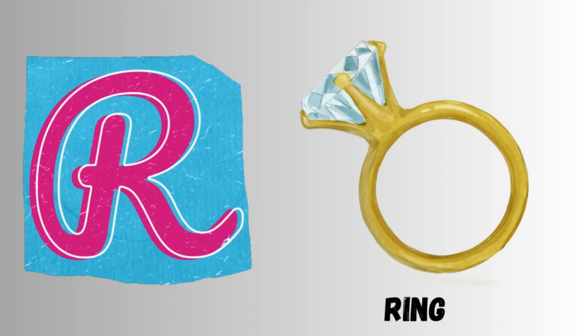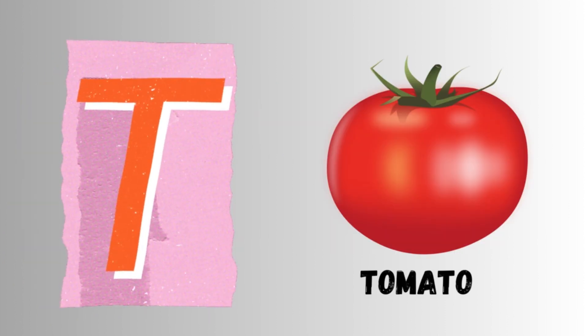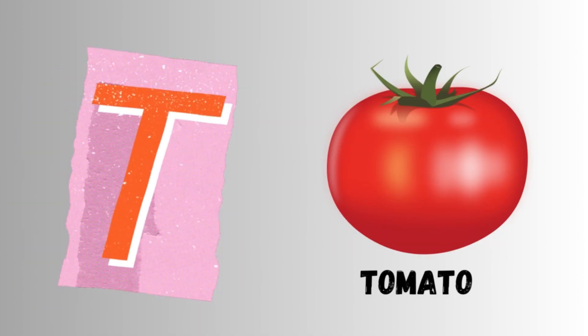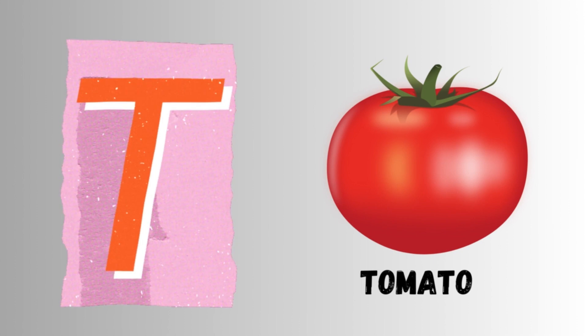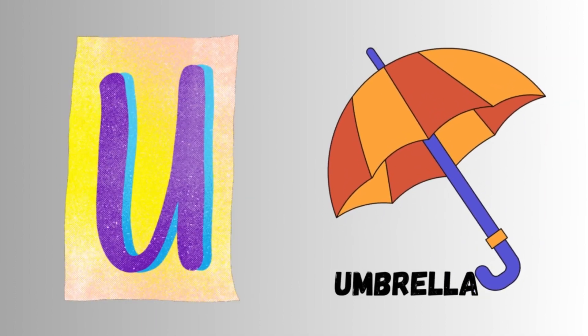R for Ring, S is for Shush, T for Tomato, U for Umbrella.